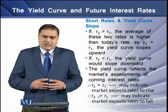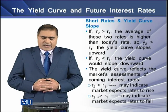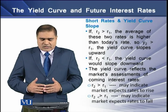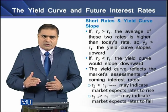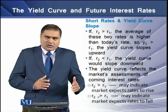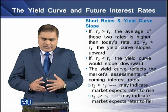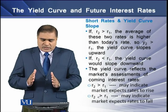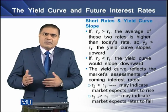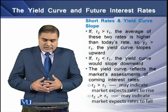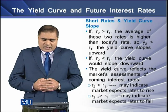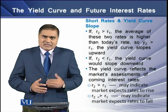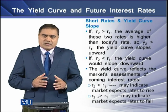How are short rates related to the slope of the yield curve? If R2 is greater than R1, the average of these two rates is higher than today's rate, meaning Y2 (the yield at two-year maturity) should be greater than R1, and the yield curve slopes upward. If R2 is less than R1, the yield curve slopes downward. The yield curve reflects the market's assessment of coming periods' interest rates: R2 > R1 indicates the market expects rates to rise; R2 < R1 indicates rates are expected to fall.